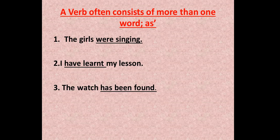A verb often consists of more than one word, so please don't get confused. For example, 'the girls were singing' — the verb is 'were singing.' 'I have learnt my lesson' — the verb is 'have learnt.' 'The watch has been found' — so these are verbs.